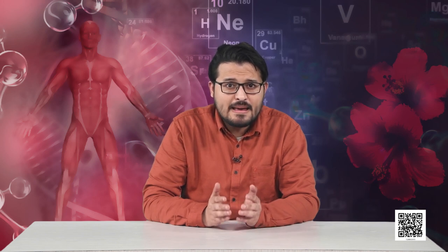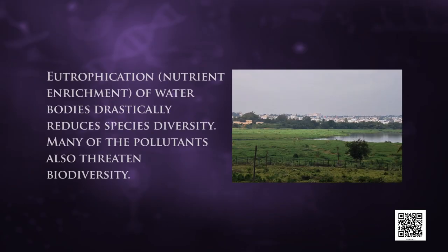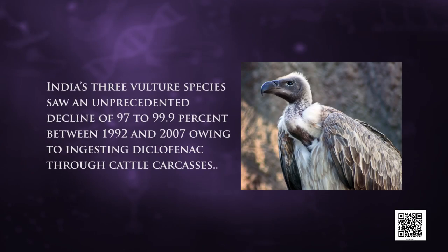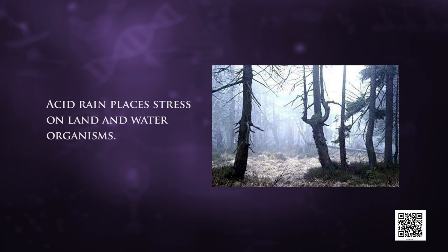Disturbance and pollution also cause biodiversity loss. Man-made disturbances differ from natural ones in intensity, rate, and spatial extent. Some human impacts are entirely new — such as vast numbers of synthetic compounds, massive release of radiation, or oil spills in the seas. Pollution may reduce and eliminate populations of sensitive species. For example, pesticide-linked decline of fish-eating birds and falcons, and lead poisoning causing mortality in ducks, swans, and cranes that ingest shotgun pellets from lakes and marshes. Eutrophication drastically reduces species diversity. DDT prevents birds from laying healthy eggs. India's three vulture species saw an unprecedented decline of 97 to 99.9% between 1992 and 2007 due to ingestion of diclofenac through cattle carcasses. Acid rain and increased ocean acidification from CO2 also threaten biodiversity in coral reefs and marine ecosystems.